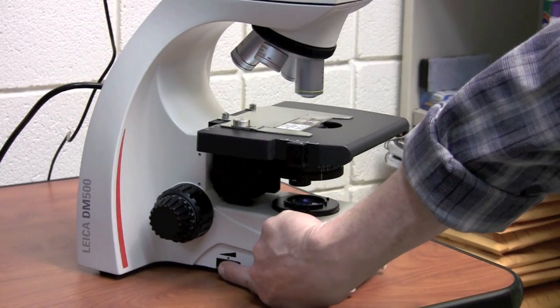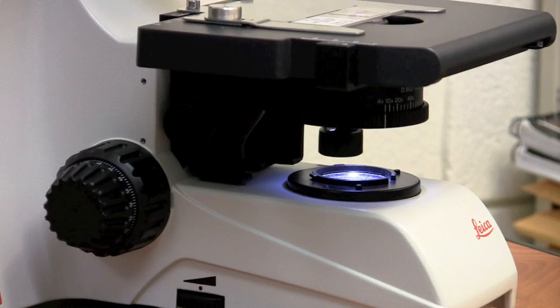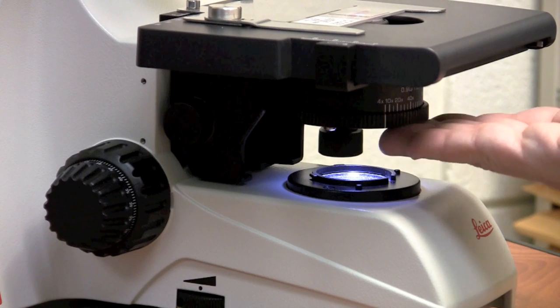Turn the light source all the way up to the brightest setting. Check that the condenser is in the most upright position, right underneath the stage.